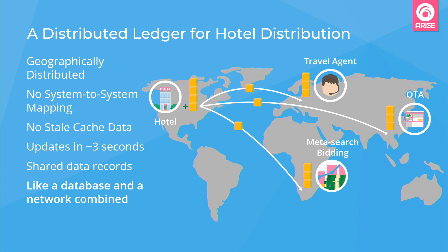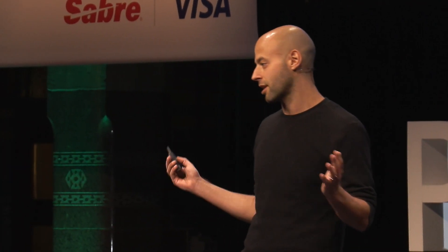A distributed ledger has the same properties, but is made up of geographically distributed copies. When a change is pushed to one copy of the ledger, that change is then sent to all other copies that sync a couple of seconds later. It's like a database and a network combined, where all connected parties can view and update the same shared record at the same time. And there are no API integrations needed anymore, no system-to-system mapping needed anymore.